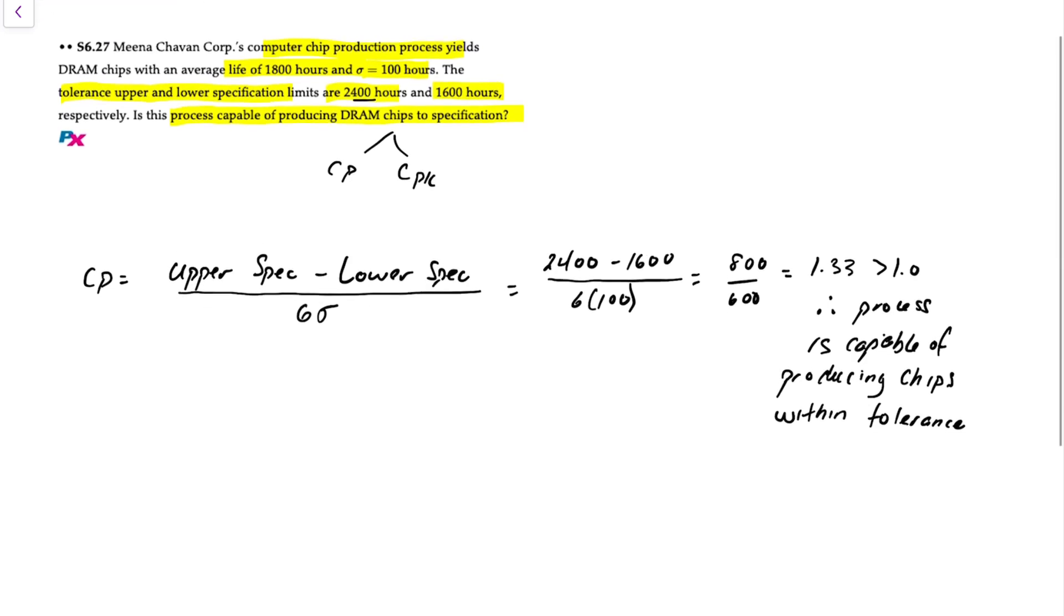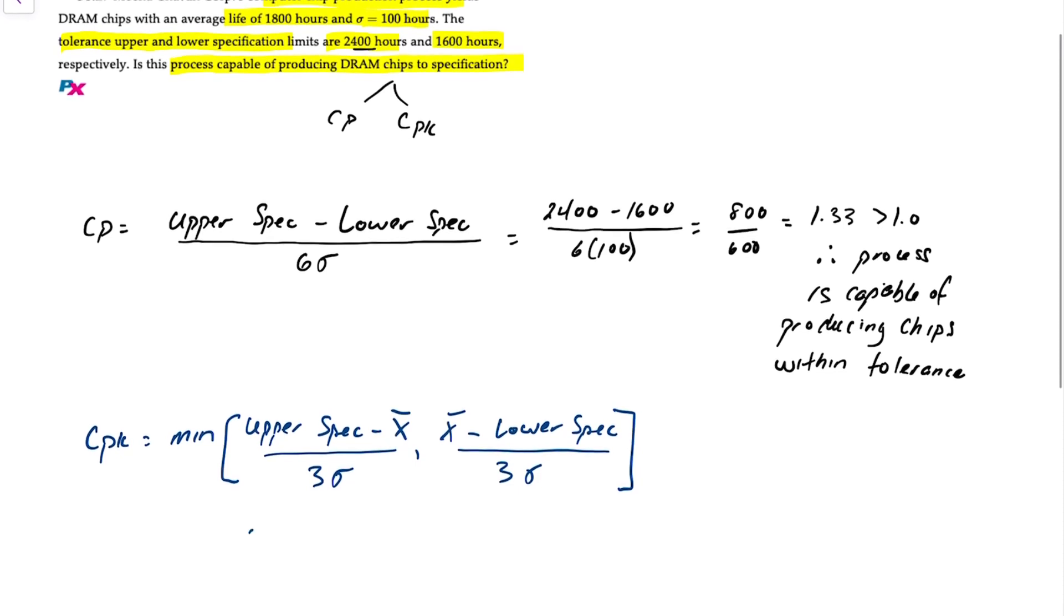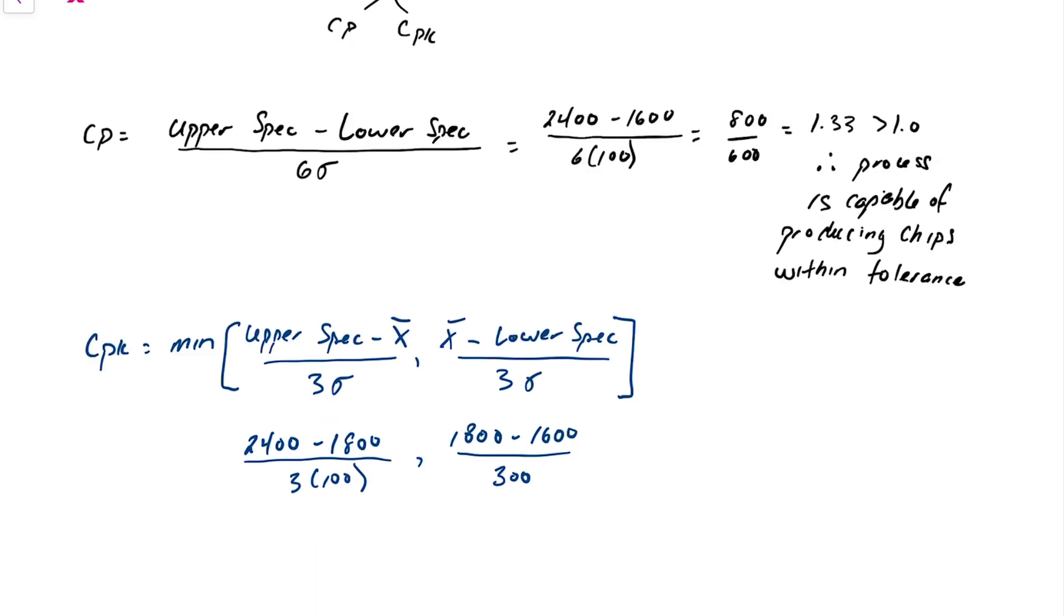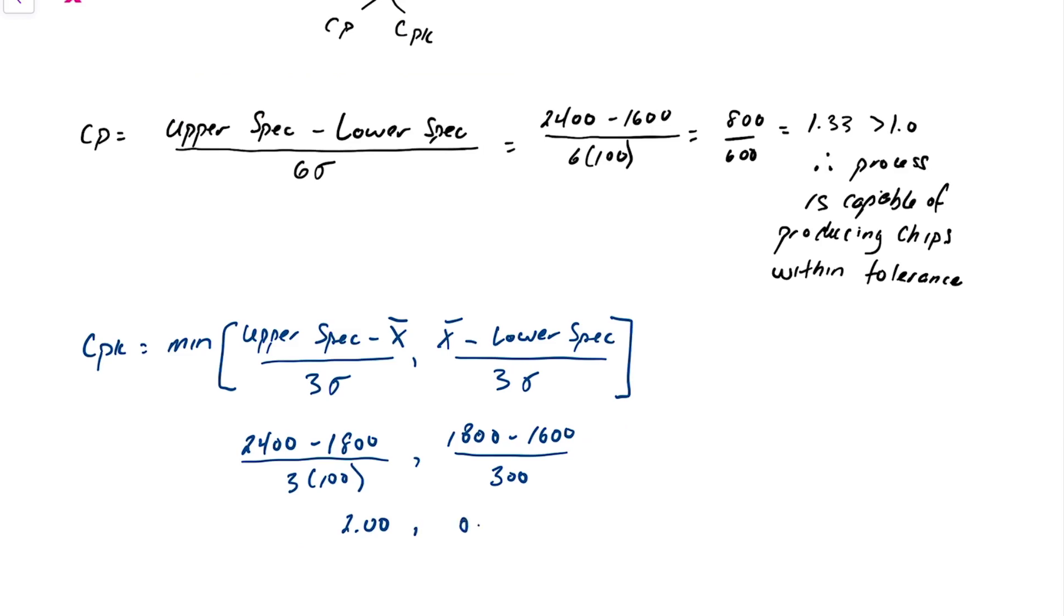But now let's look at the CPK. The CPK is equal to the minimum of either the upper spec minus the average output or x bar divided by three standard deviations or the average life minus the lower spec divided by three standard deviations. So we know our upper spec is 2400 and we know our average is 1800 hours and we're going to divide that by three times 100 or 300, and the lower will have 1800 minus 1600 divided by 300. So we either have 2.00 and on the lower spec 0.67 and we want the minimum of either of those, well that's going to be 0.67.